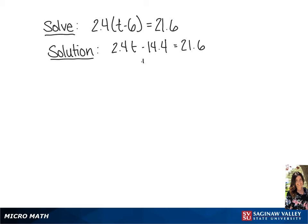Now we're going to add 14.4 to each side. This gives us 2.4t equals 36.